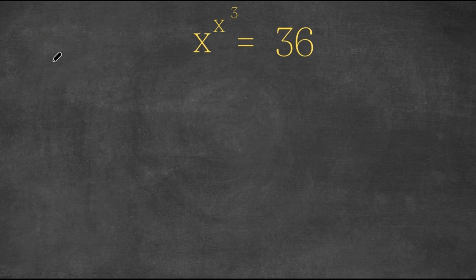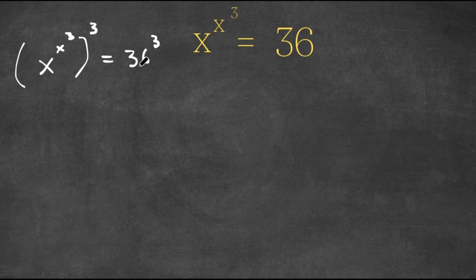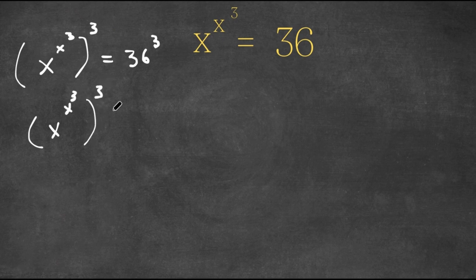I'm first going to take the power of 3 on both sides. So now we have x to the power of x to the power of 3, all to the power of 3. And this is equal to 36 to the power of 3. Now 36 is equal to 6 squared, so now we have x to the power of x to the power of 3, all to the power of 3, is equal to 6 squared to the power of 3.